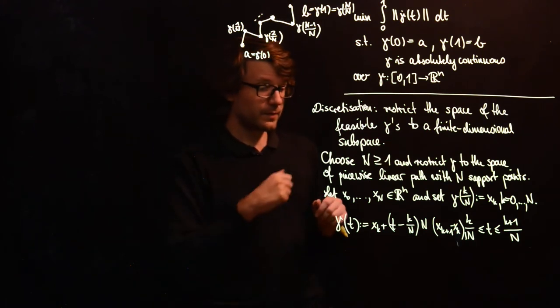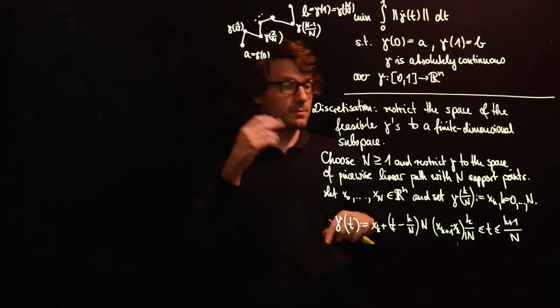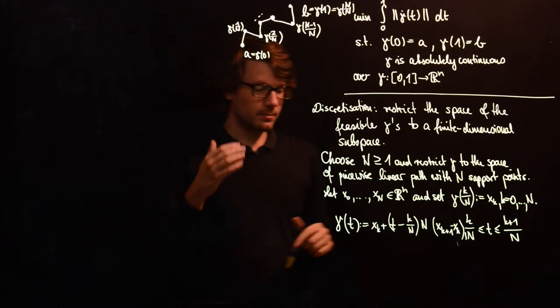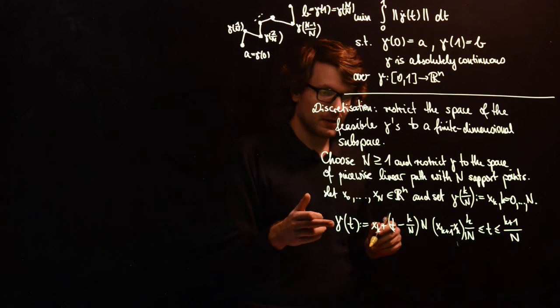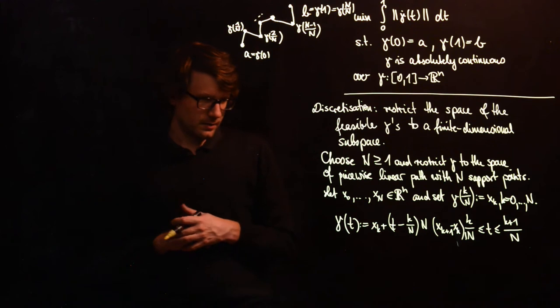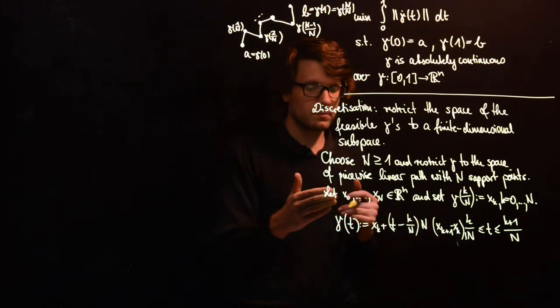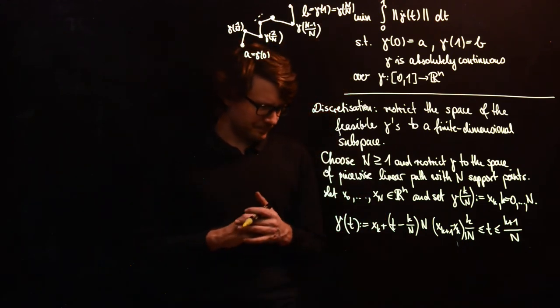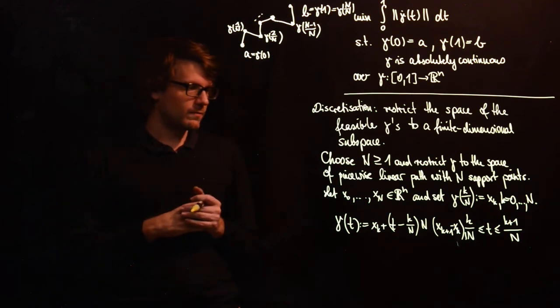So now we have seen that we can choose x0 to x capital N which will be the variables of our new discretized optimization problem. And from those points we can define a piecewise linear curve. Now instead of optimizing over those curves, we will be optimizing over these points. And one further step is required.